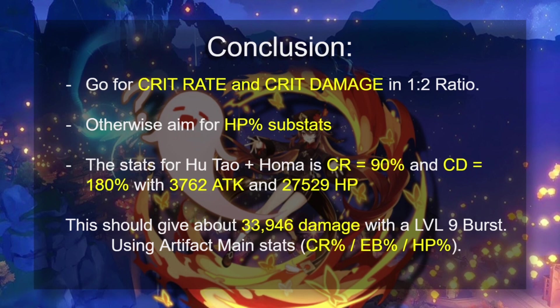The stats for Hu Tao and Homa, the highest value we were able to make in these two comparisons, assuming 20 favorable rolls, is a 90% crit rate and a crit damage of 180%. The attack is 3762 and then the HP is 27.5k. This should give a damage output of about 34,000 damage with a level 9 burst using artifact main stats of crit rate, elemental bonus percent and HP percent.